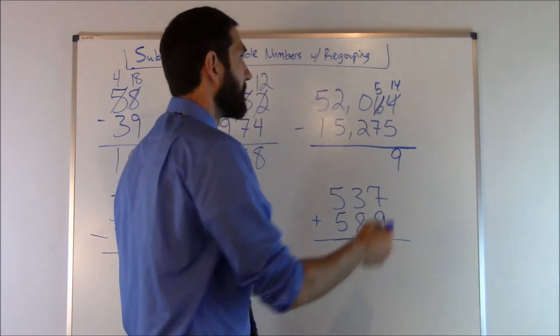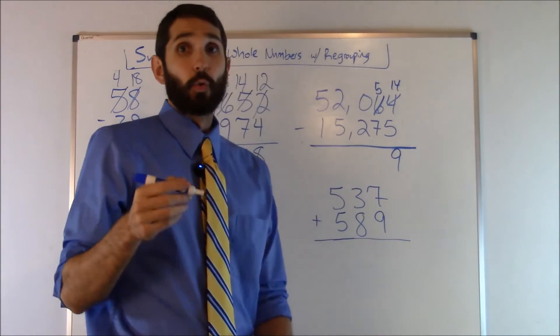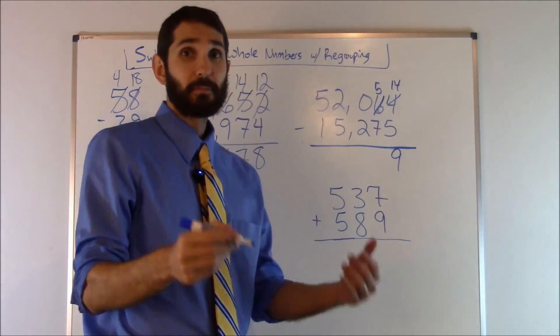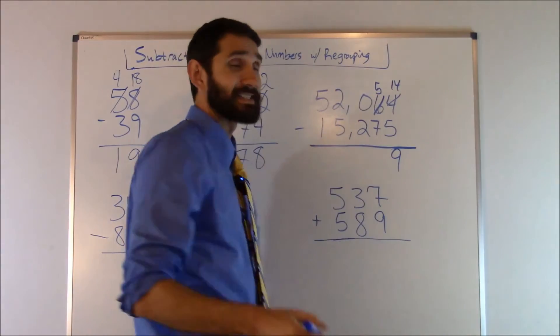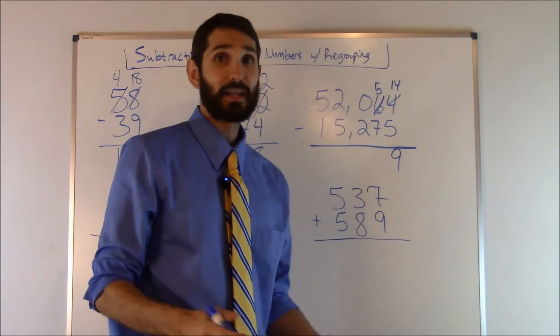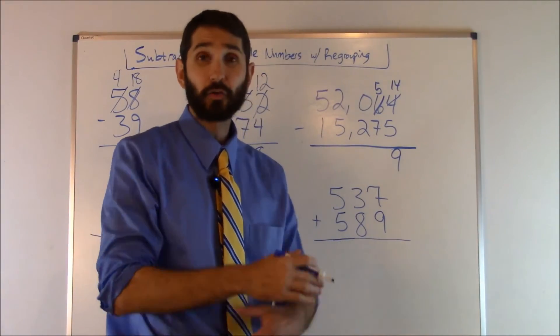We go to the next column: five minus seven. We can't do that, so we got to bum from the neighbor again. The only problem is the neighbor is a zero. They don't have any money. They don't have anything to let us borrow. They are losers.